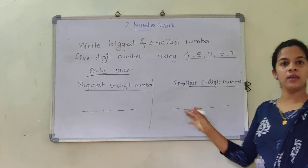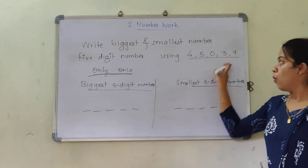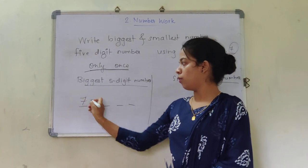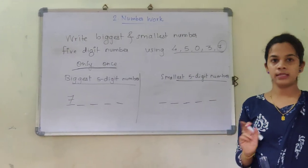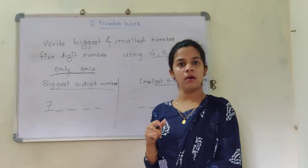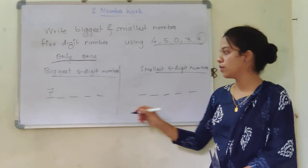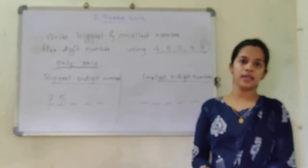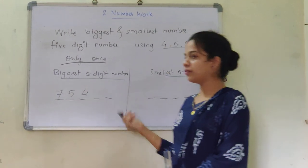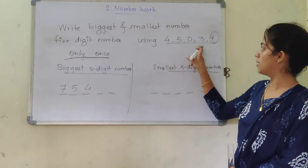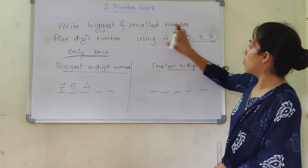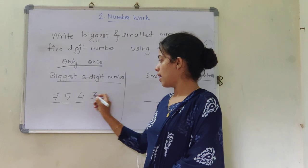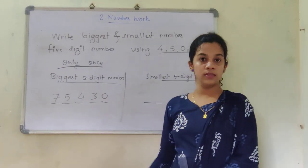Now we will just focus on the biggest 5-digit number. You are not going to repeat 7 or 5 two or three times — you are going to use these 5 numbers only one time. Which is the biggest number from all 5? It is 7. So 7 will obviously hold the first place. After 7 the next biggest is 5, then 4, then 3, and the last one will be 0. So the biggest 5-digit number is 75,430. This part was very easy to solve.